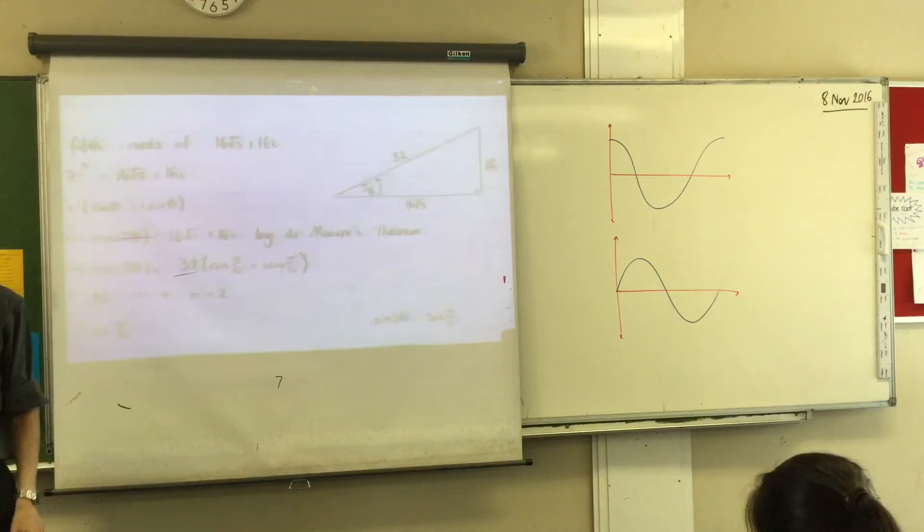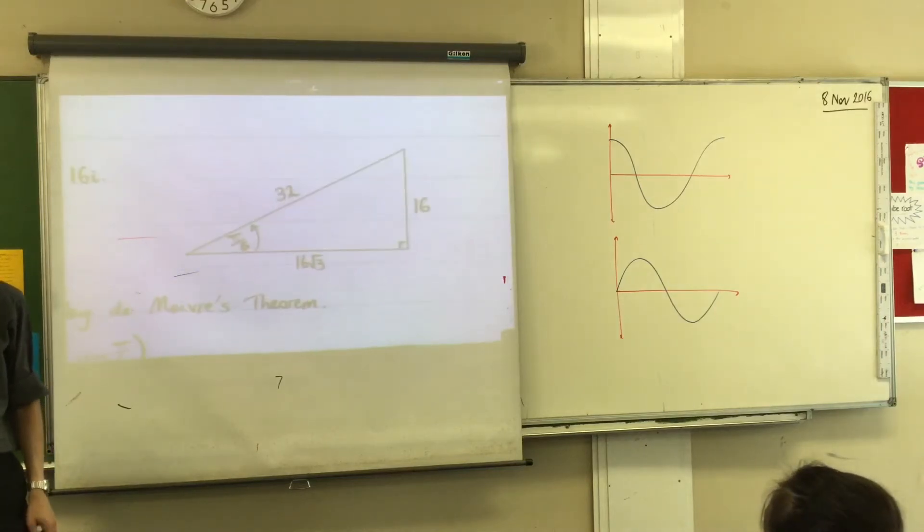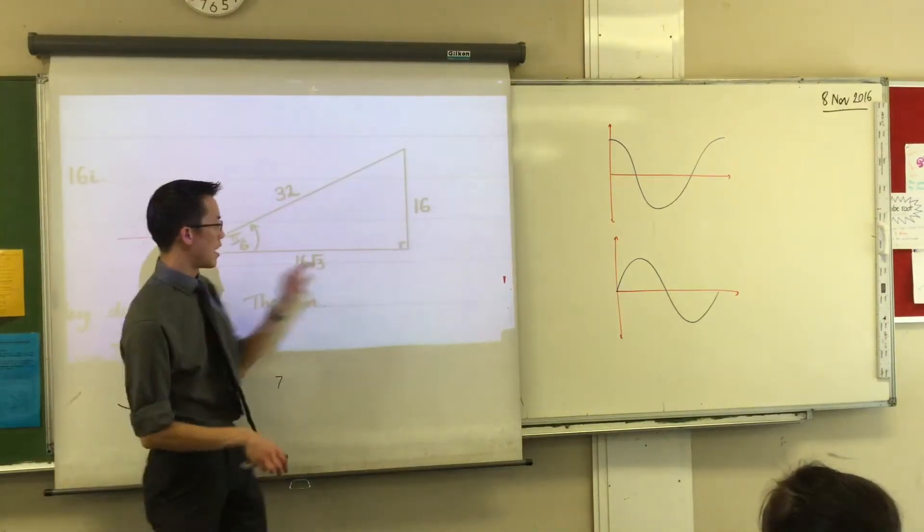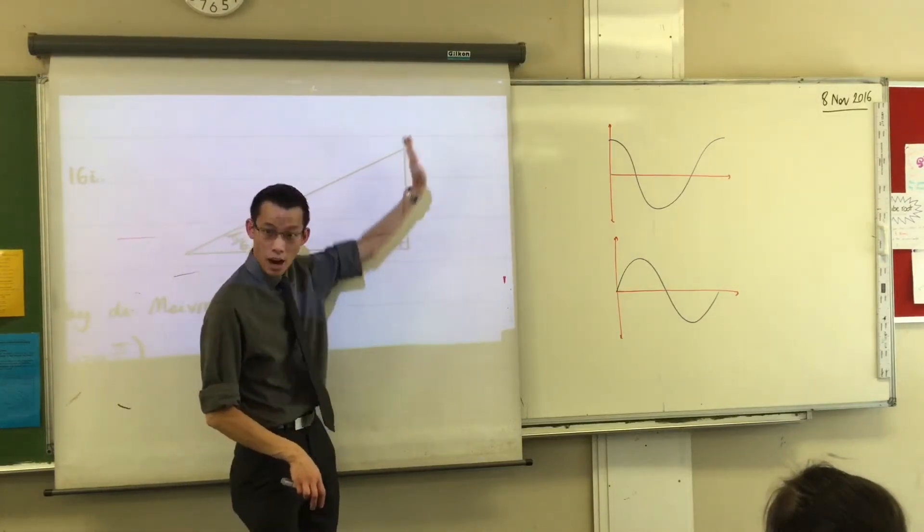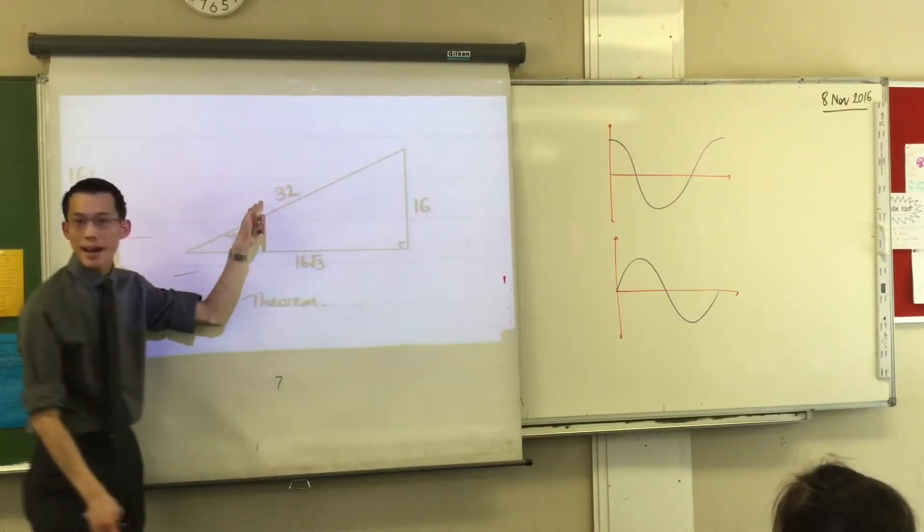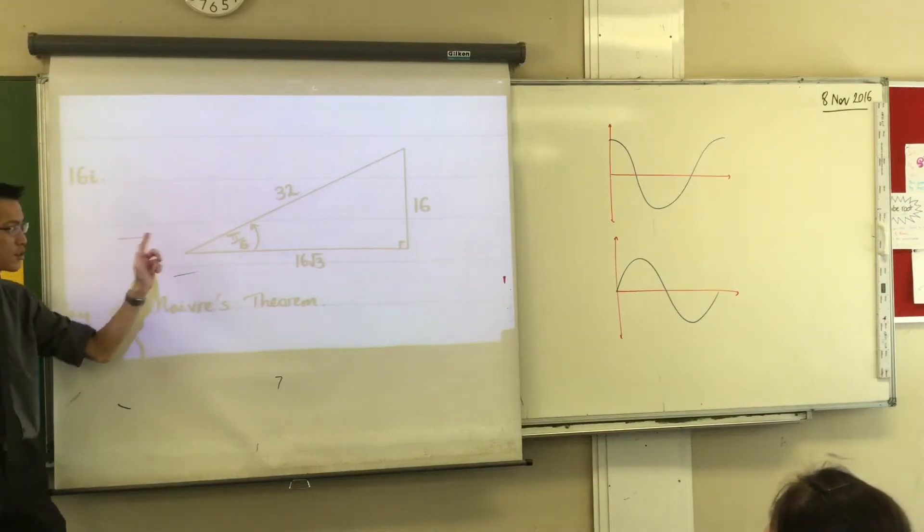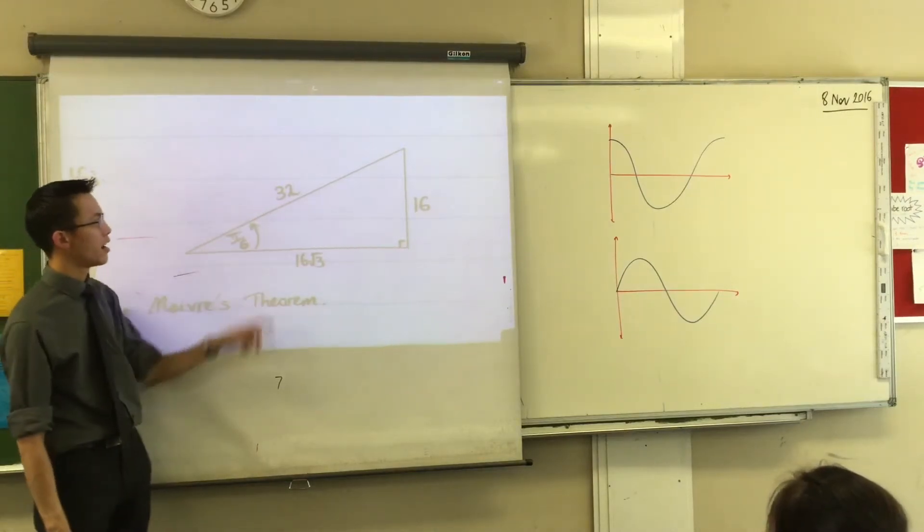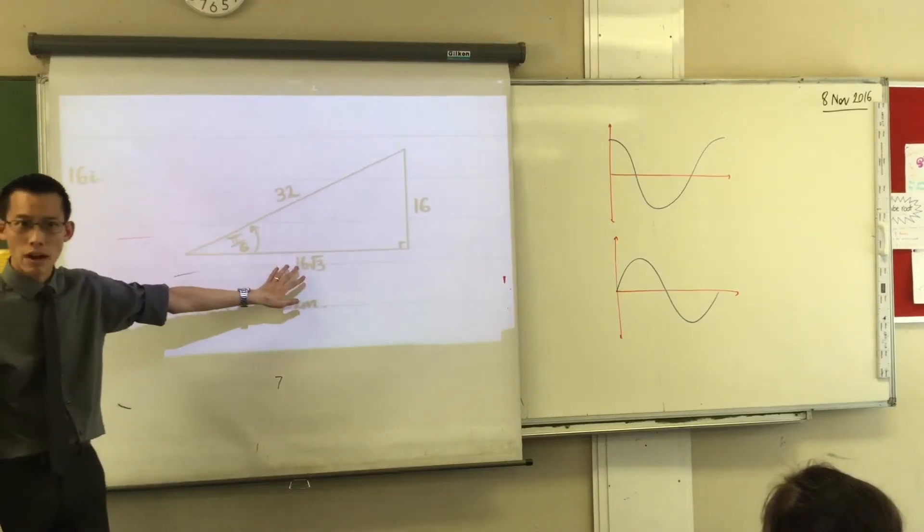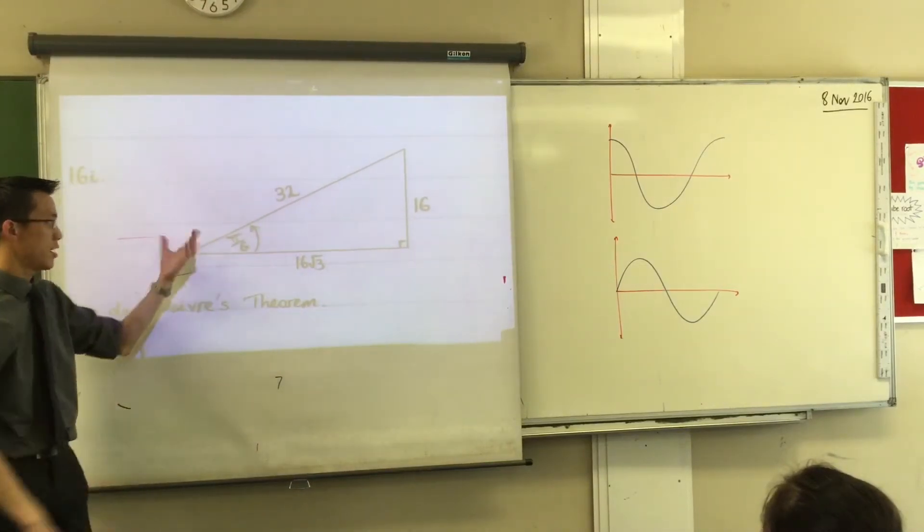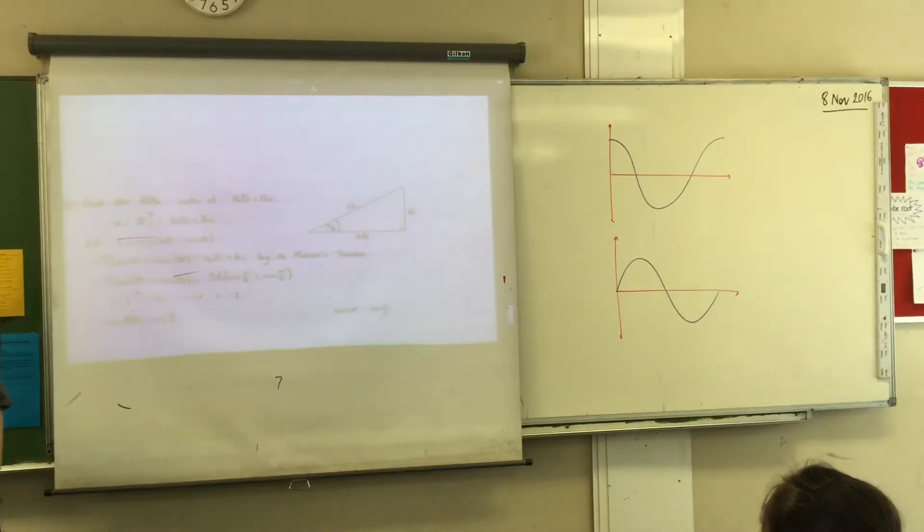Now you can see where I got this. I like to draw myself a little triangle over here. You can see there's my 16√3, there's the real part, and this is my 16i, there's the imaginary part. And this is the triangle you get. So hopefully you recognize, okay, this is the 1, 2, √3 triangle. So π/6 is the argument you're interested in.